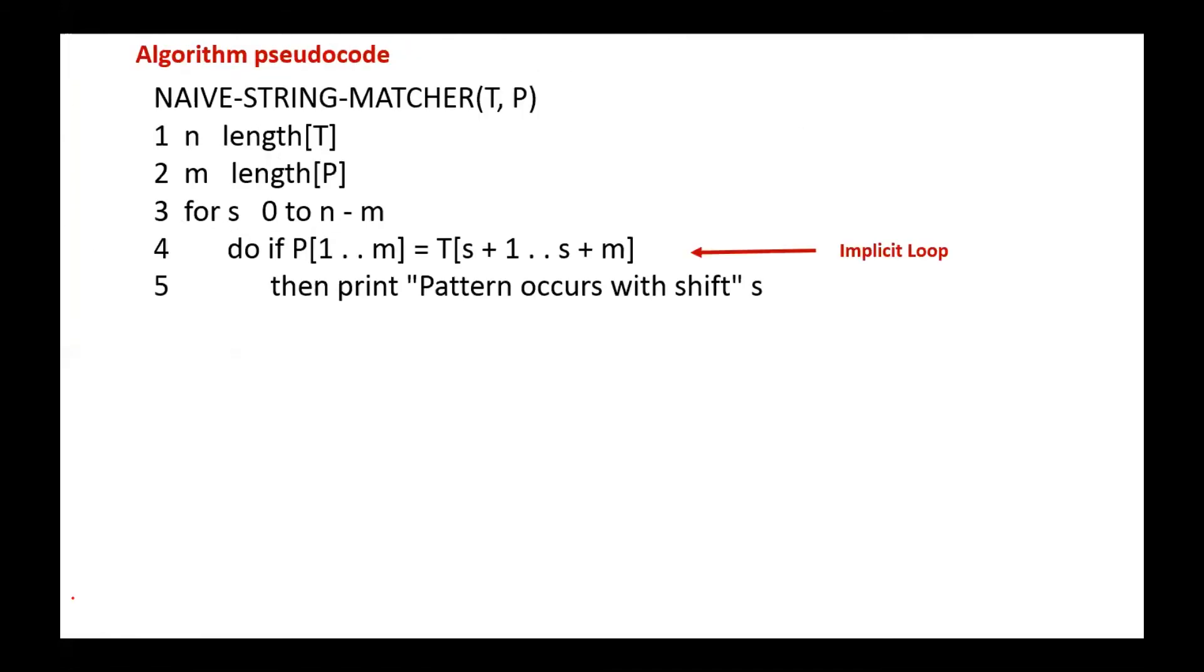Here is the pseudocode: given the text of size n and the pattern of size m, we start an external loop ranging from 0 to n minus m, and in the internal loop we check if the pattern is found in the text.